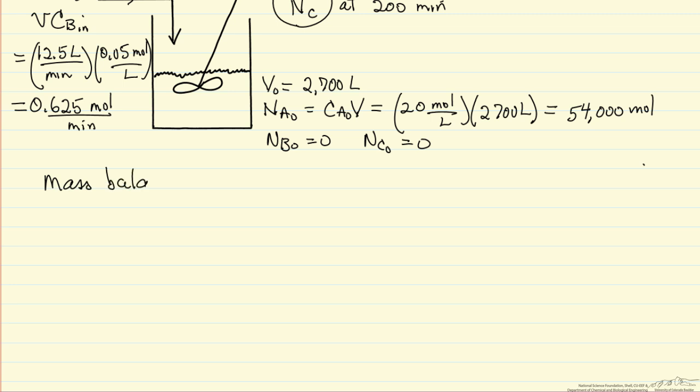I'm going to write a mass balance for each of the components. The derivative of Na, remember Na is the number of moles in the reactor at any time, that derivative with respect to time is equal to the rate of reaction of A, which is the rate constant times the concentration of A, concentration of B, and the volume of the reactor. The initial condition is Na0 equals 54,000 moles.